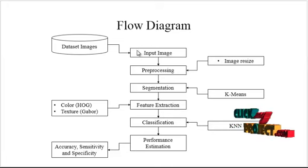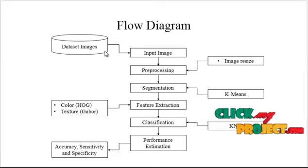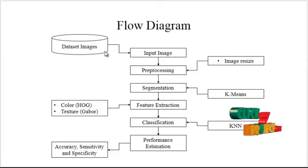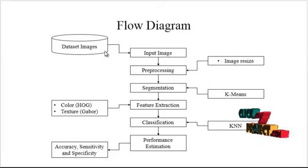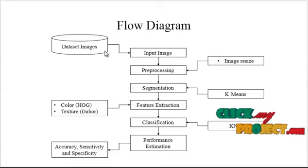First, the input is taken from the dataset images. The dataset consists of both fire images and non-fire images, and we select one image from the dataset.